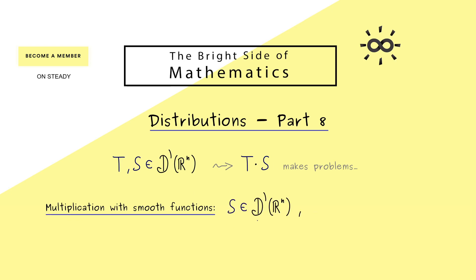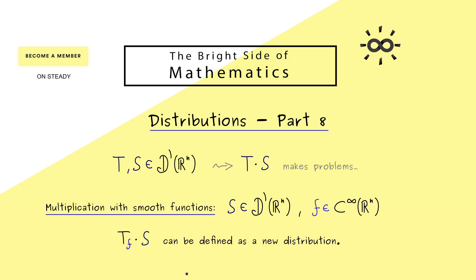Hence we take a distribution s and a function f from C-infinity. In other words, the function f should be arbitrarily often differentiable. In this case, we can say what tf times s should be, and of course what should come out is again a distribution.